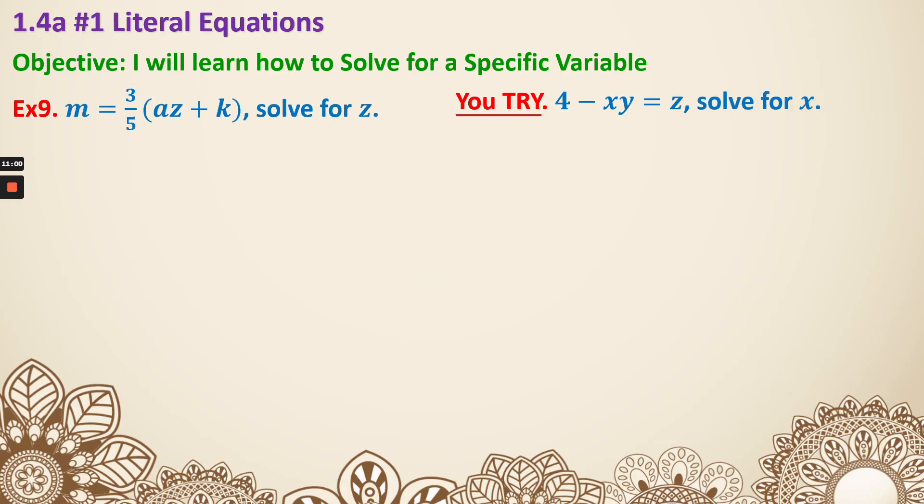Number 9. I see a fraction again, so I'm going to try to get rid of it, times by 5/3 on both sides. I got (5/3)m, they cancel, equals az + k. I can also write (5/3)m as 5m/3. That's the same. Okay, next I need to subtract k on both sides. So I got 5m/3 - k = az.